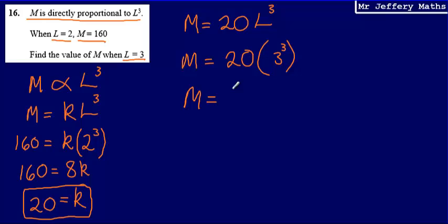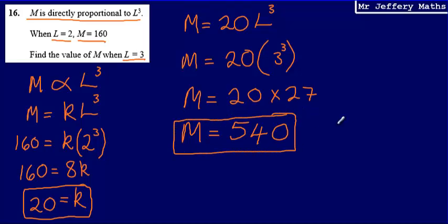That means that I can say that M is going to be equal to 20 times 3 cubed. 3 cubed is 27, so 20 multiplied by 27. And so I can say that M will be equal to 540. So my final answer there is going to be that M is equal to 540.